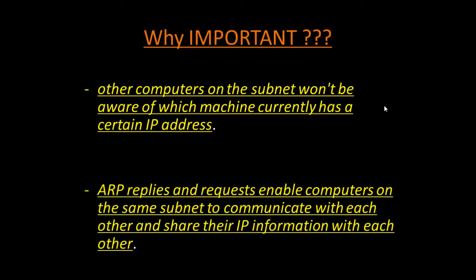In a network where IP addresses are randomly handed out to different machines via DHCP, there is no telling who has what IP address. In order to successfully transfer traffic, one must know the specific IP address of a certain machine so that the packet can be effectively routed to the right location. ARP replies and requests enable computers on the same subnet to communicate and share their IP information. ARP works at layer 2 of the OSI model and therefore does not rely on IP, which operates at layer 3. This is why ARP requests are broadcast throughout the subnet instead of being sent directly to a computer with a specific IP address.